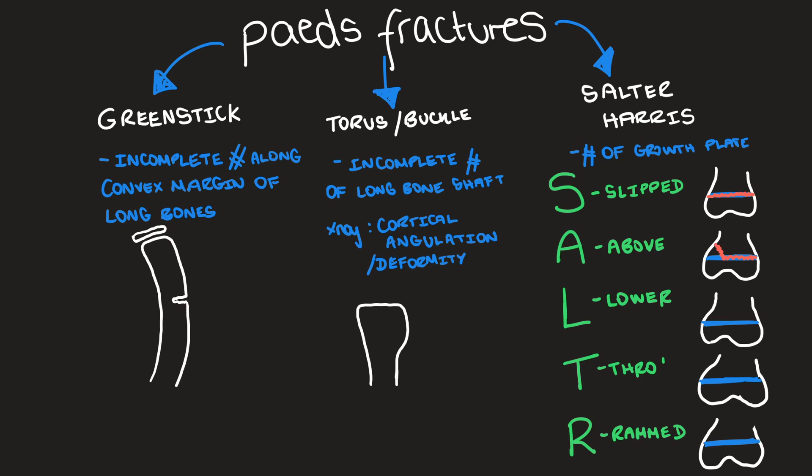Type 3, L for lower, goes through the growth plate and through the epiphysis. Type 4, T for through, goes through both the metaphysis, the growth plate, and also the epiphysis.